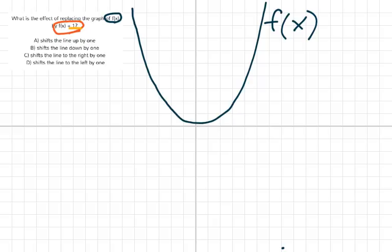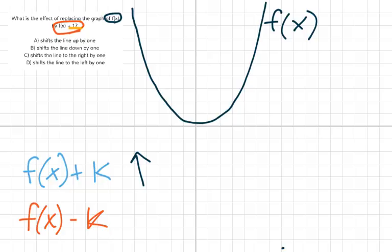When we add a k value, let's write this down here, f(x) plus k is going to shift the graph up. And then f(x) minus k is going to shift the graph down.